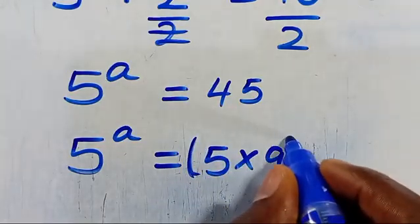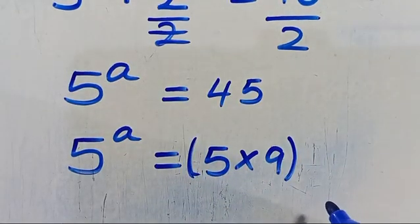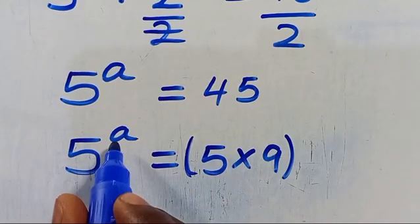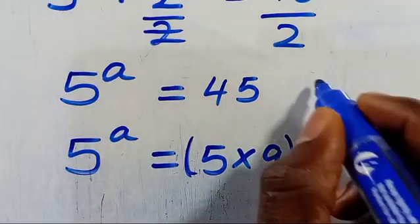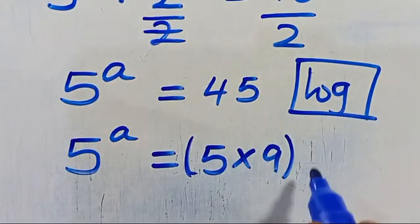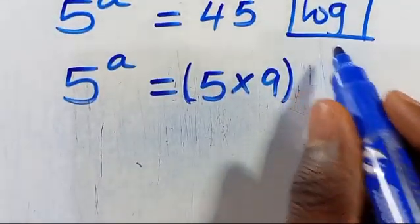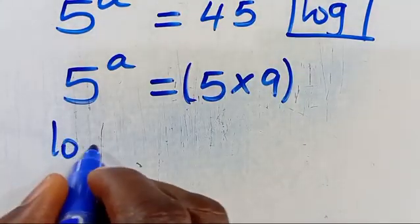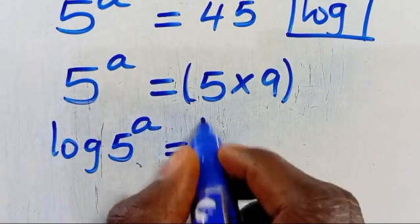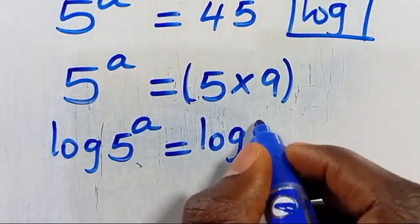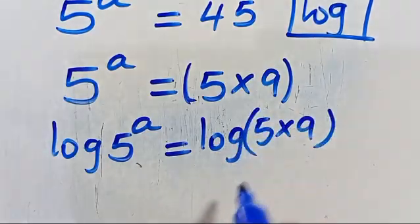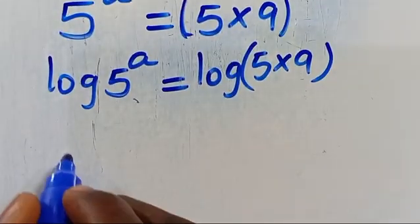Now let us introduce log to both sides of this expression in order to get the possible value of a. When we introduce log, we have log of 5 to the power of a equals log of (5 times 9).